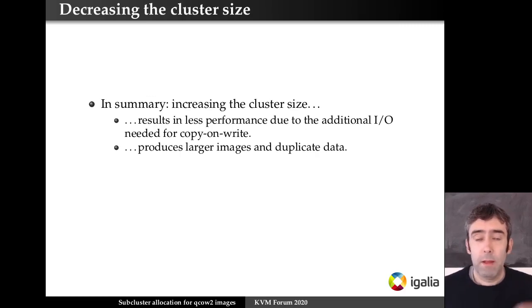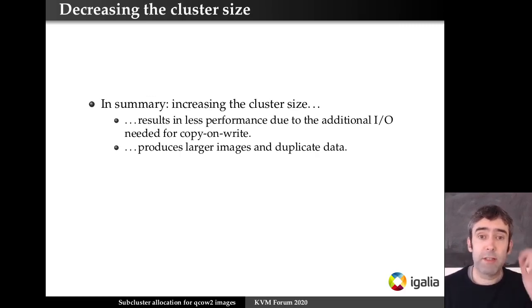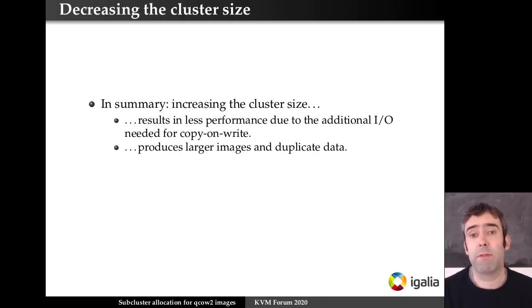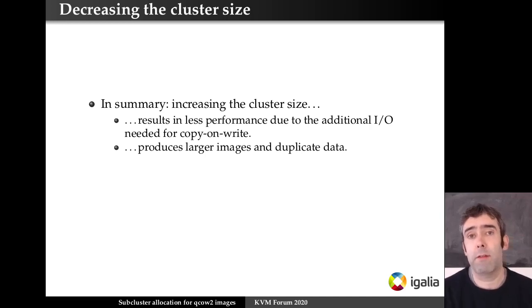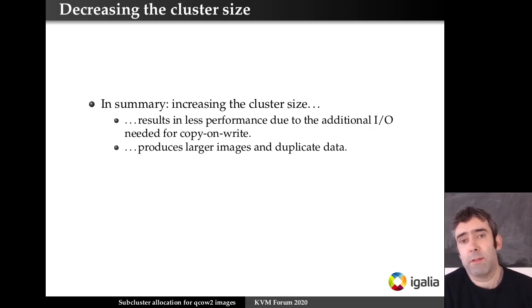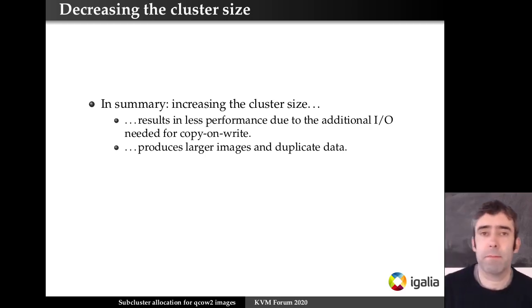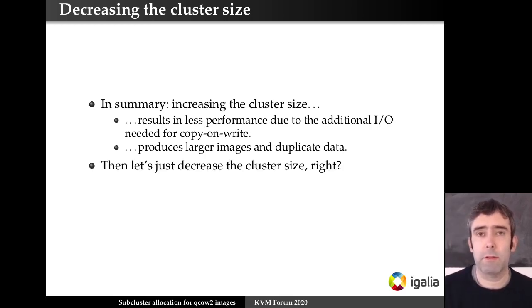In summary, if we increase the cluster size, we get less performance because there's additional I/O that needs to be done, and we also get larger images with duplicate data. So if that's clear, then why don't we just reduce the cluster size?